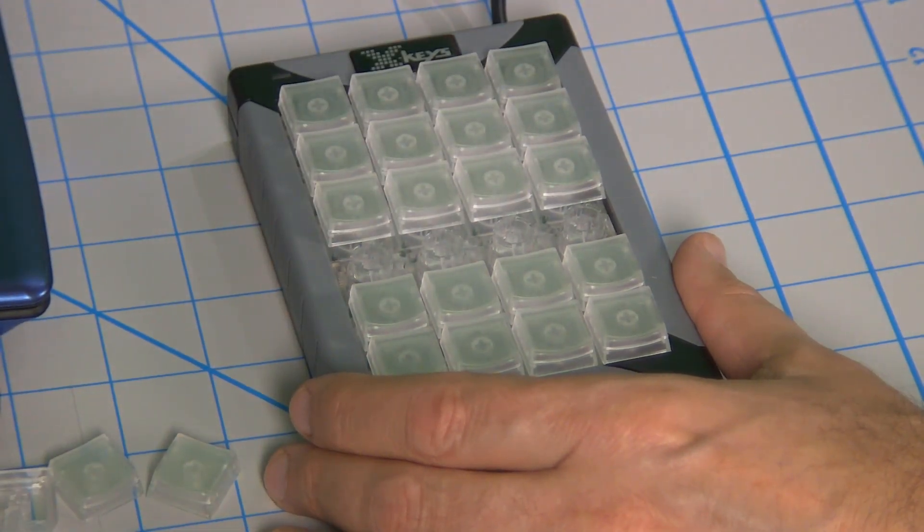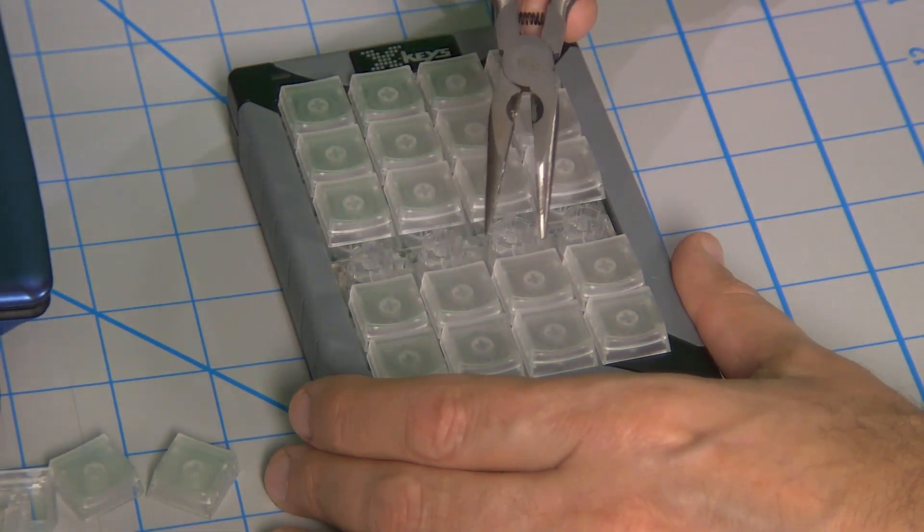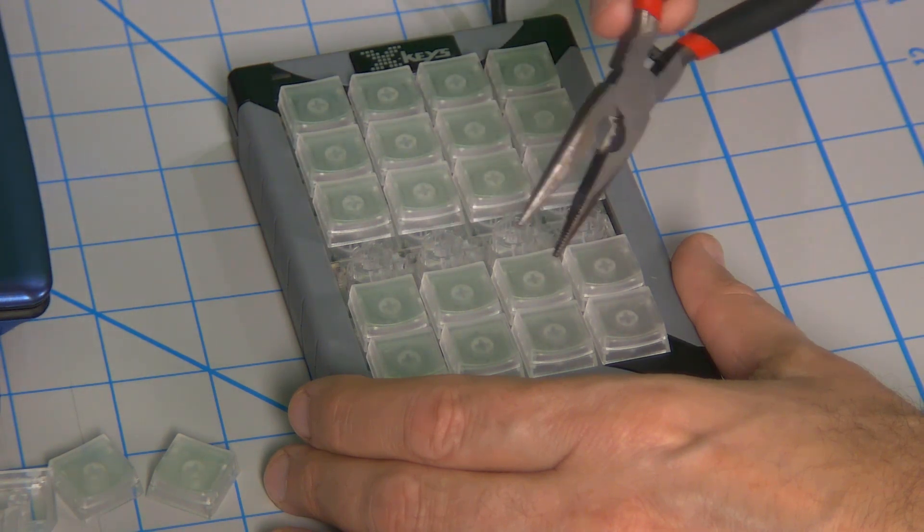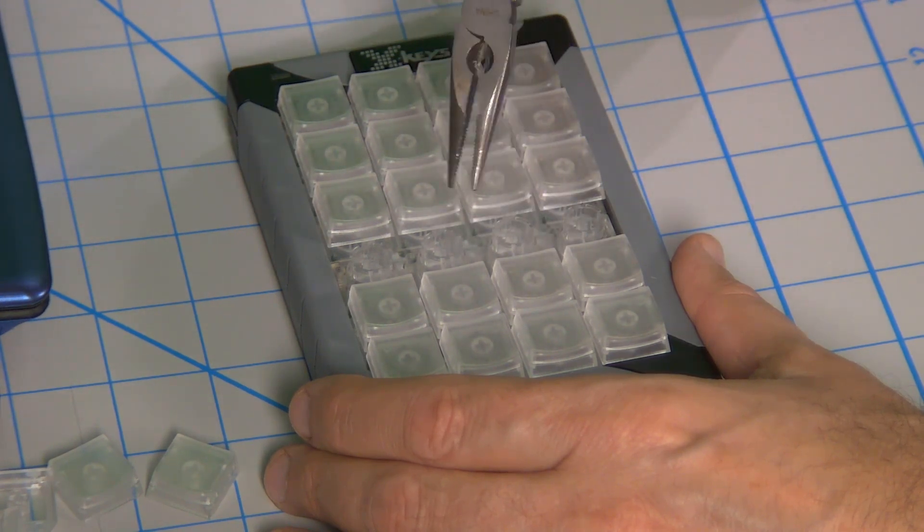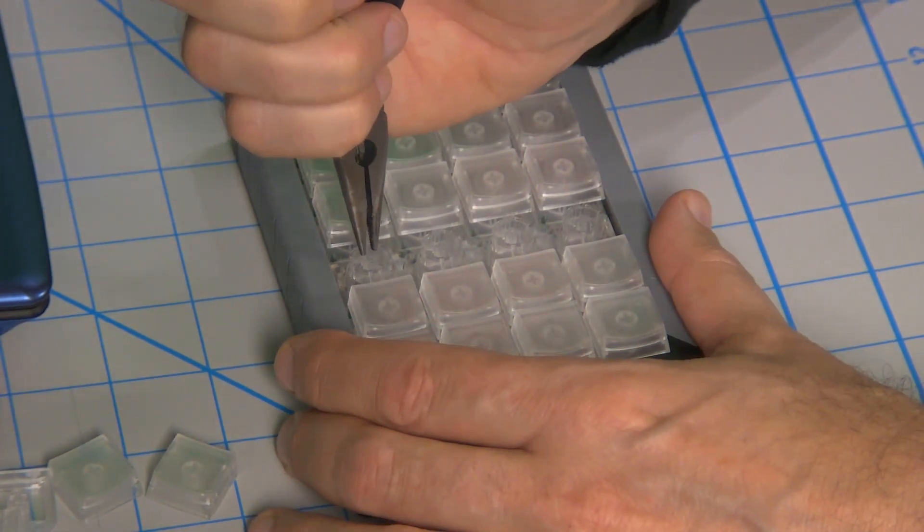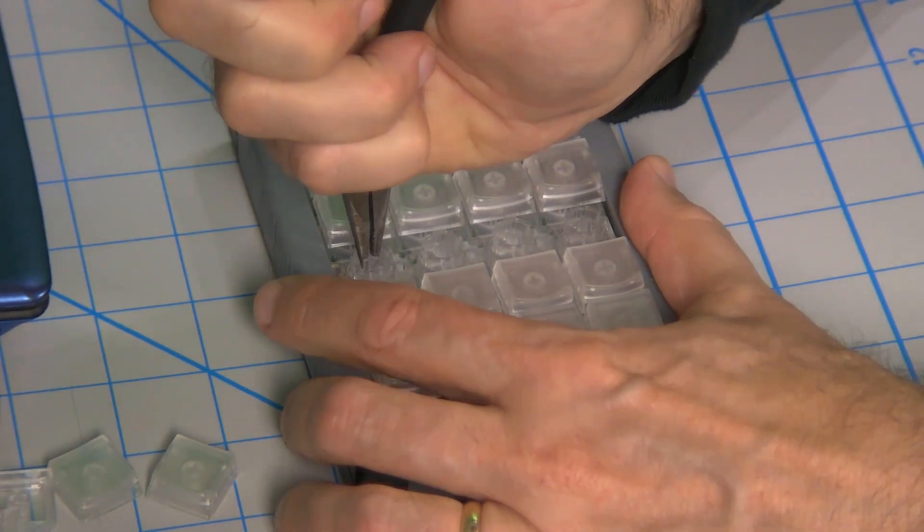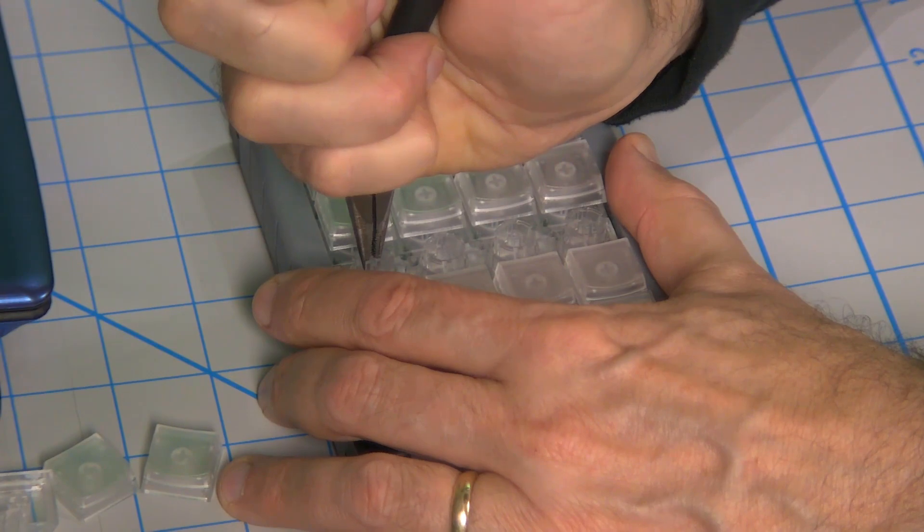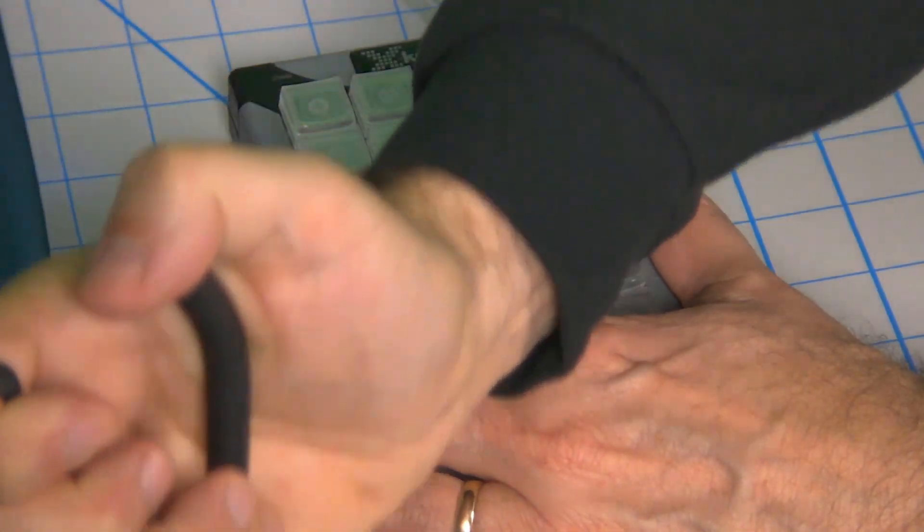So what we recommend is that you get a pair of needle nose pliers, something with serrated jaws so you can get a good grip, and grab this key stem by the cross. It takes a little bit of force, but pull straight up like that and take it out.